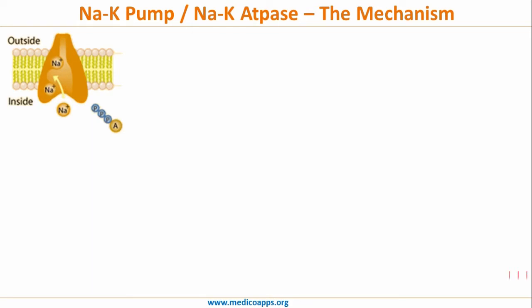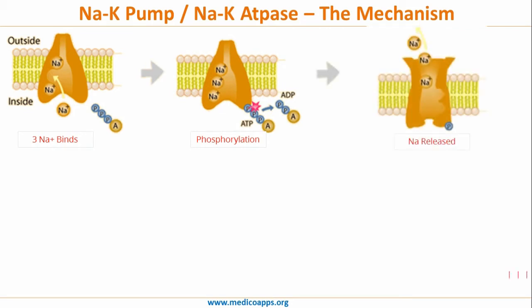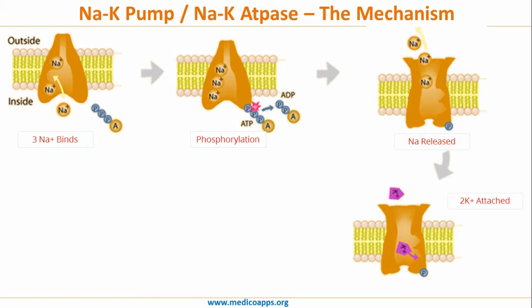The first step in the function of the sodium potassium ATPase starts with binding of three sodium ions to the intracellular portion of the alpha subunit of the pump. Once sodium binds, phosphorylation takes place. The phosphorylation leads to the opening of the channel and release of sodium ions into the extracellular space. The phosphorylated sodium potassium pump has a high affinity for potassium ions, and hence two potassium ions attach to the pump.